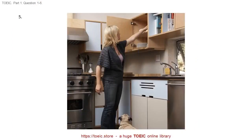Number 5. Look at the picture marked number 5 in your test book. A. The woman is doing the dishes. B. The woman is reaching into the cupboard. C. The woman is preparing a meal for her family. D. The woman is leaving the kitchen.